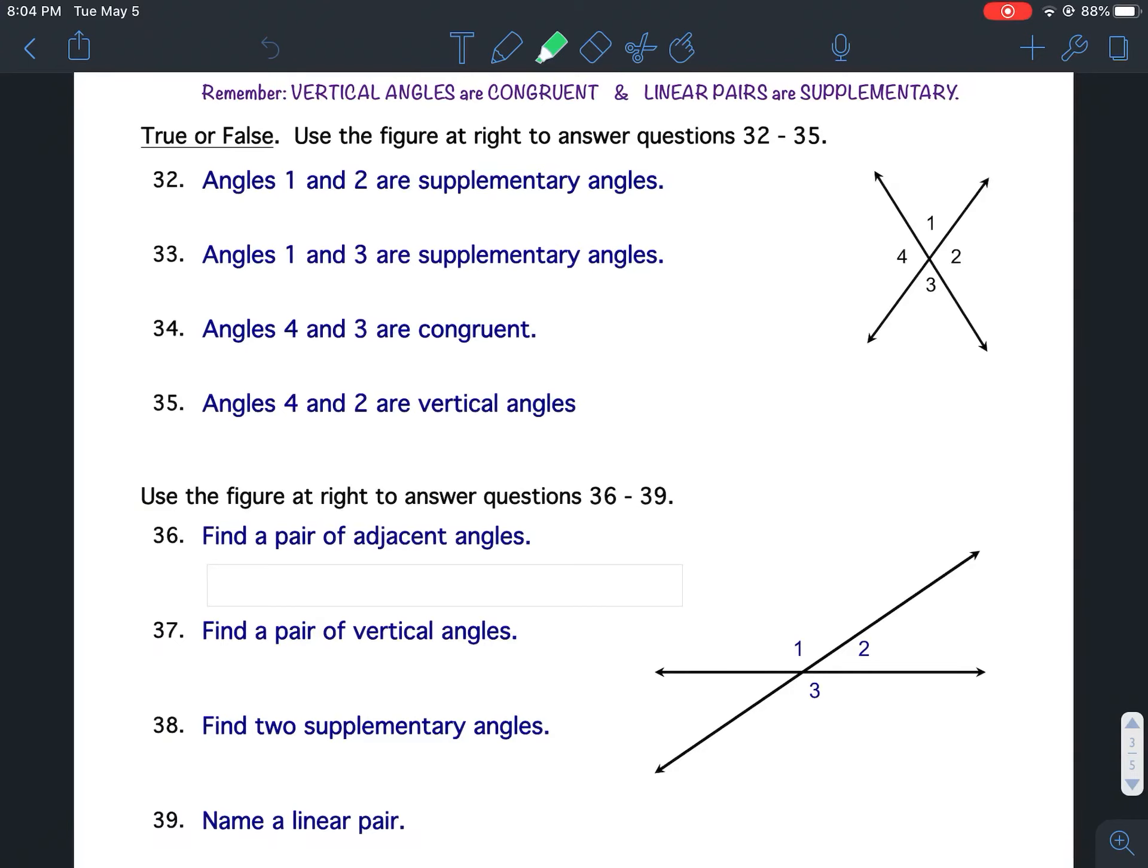Properties of angles worksheet, questions 32 through 39, starting with 32 through 35. True or false, use the figure at right to answer questions 32 through 35. So you're going to use this figure here to answer these four questions.